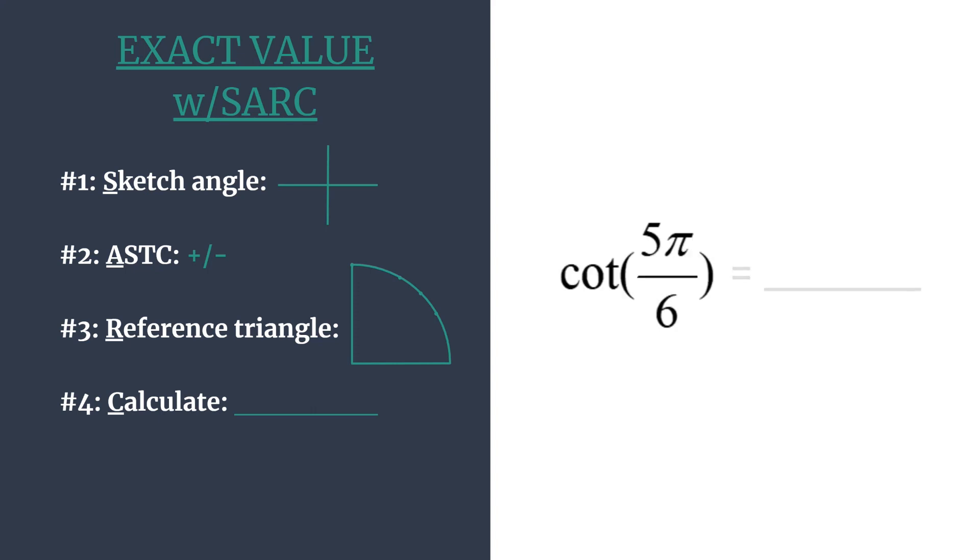So we're going to do this for the cotangent of 5π over 6. First, we're going to sketch our angle. It's positive, so it's counterclockwise rotation. And 5π over 6 is less than 2π, so we know it's less than one rotation.